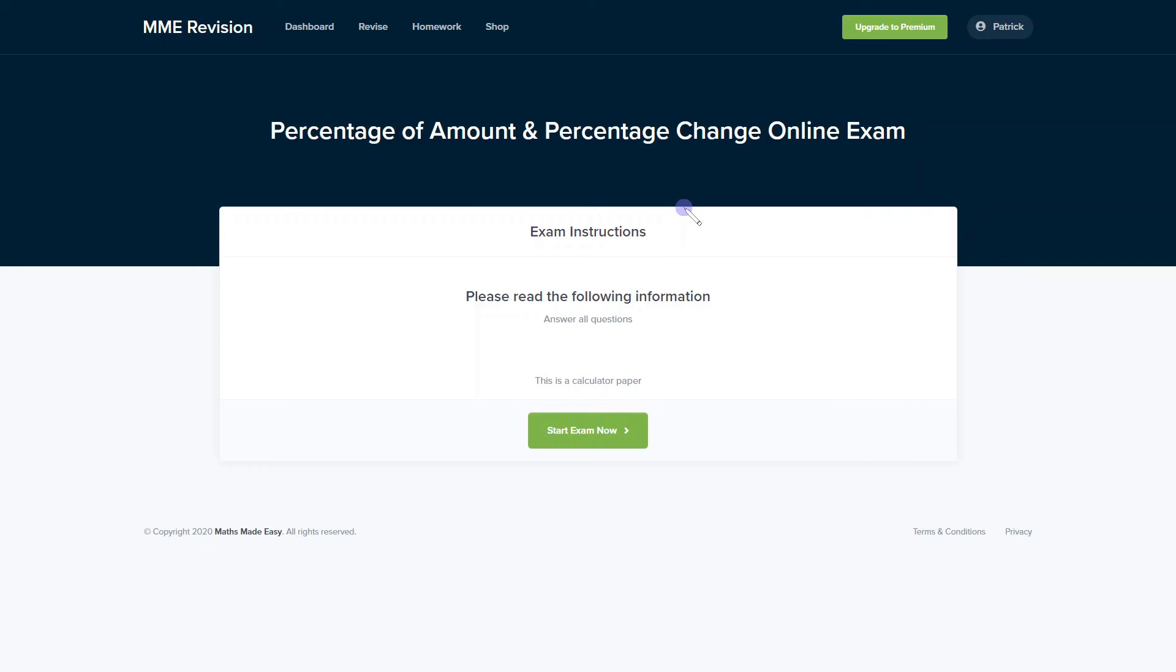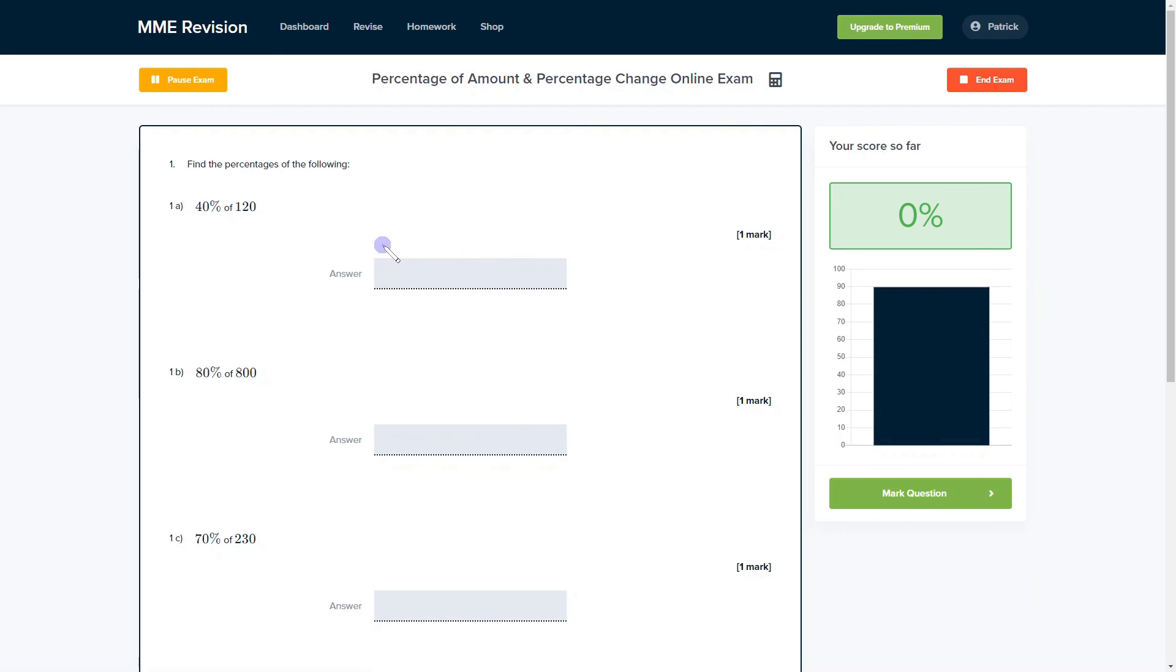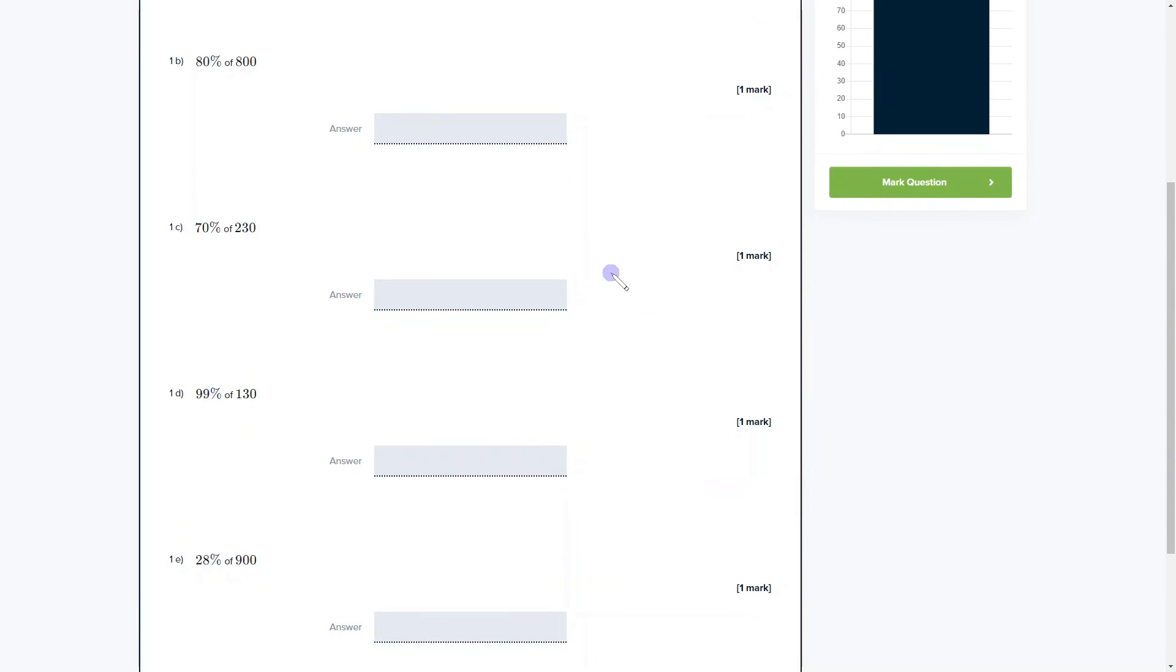Being able to work with percentages is an essential skill, so it's important that you get a lot of practice. You can do so with our online exam available through our revision platform. If you take the test you'll find loads of different questions and you get instant feedback on all of them. This is really good if you want to keep track of the areas that you're weakest at and what you need to improve. If you're interested, click the link below.